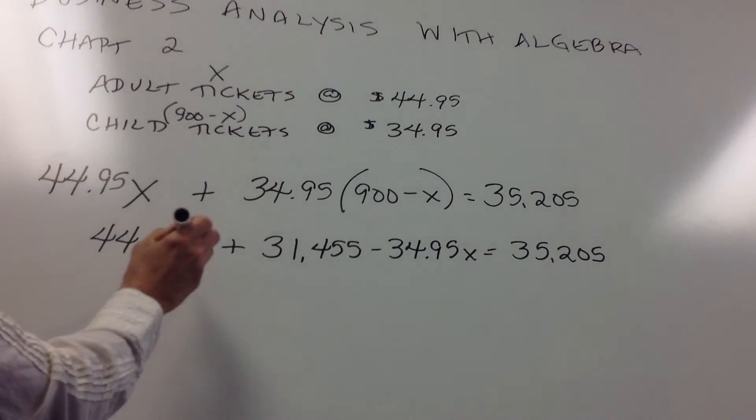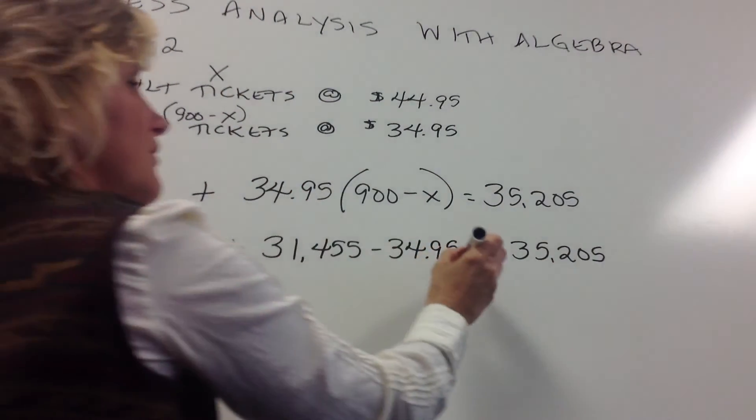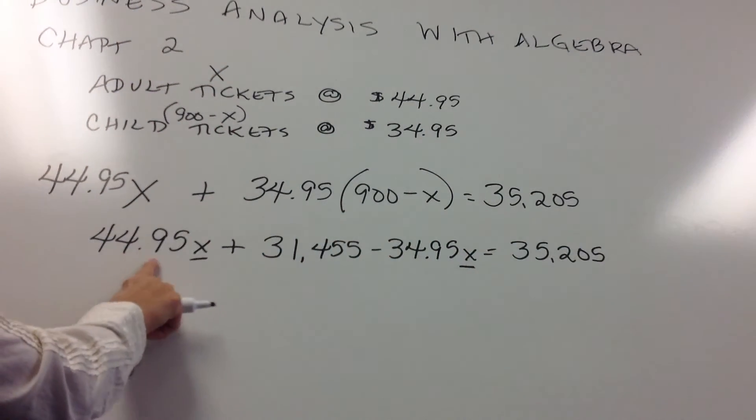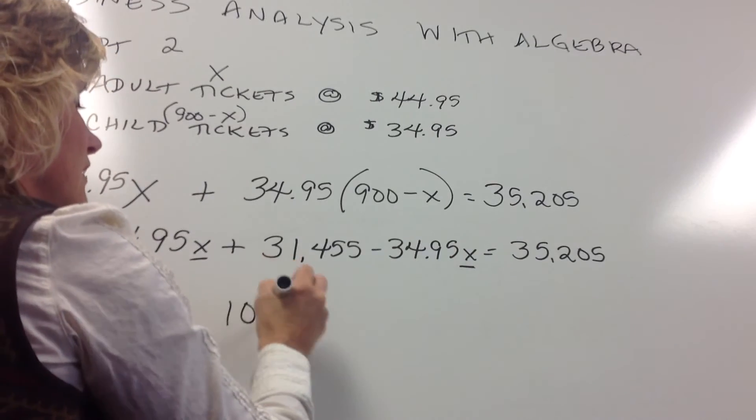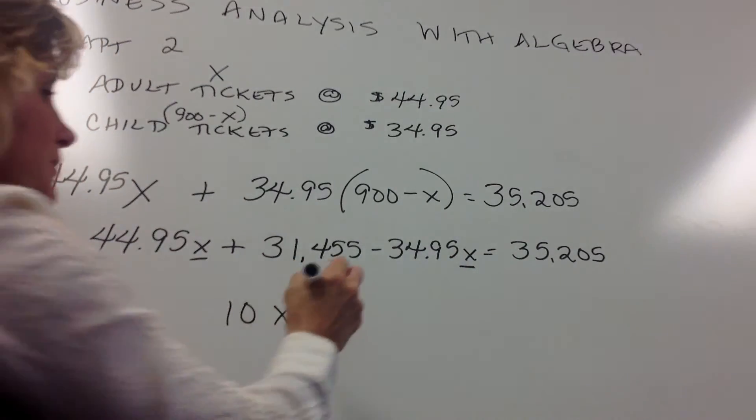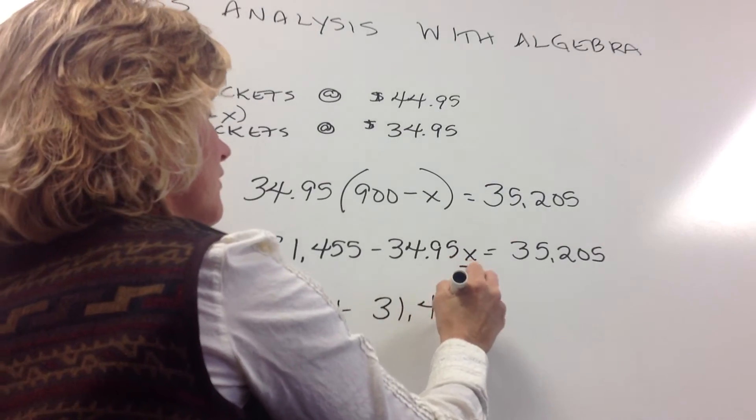And then again we have like terms. These X's are the same, which means we can combine those. So $44.95X minus $34.95X leaves us $10X plus the $31,455.